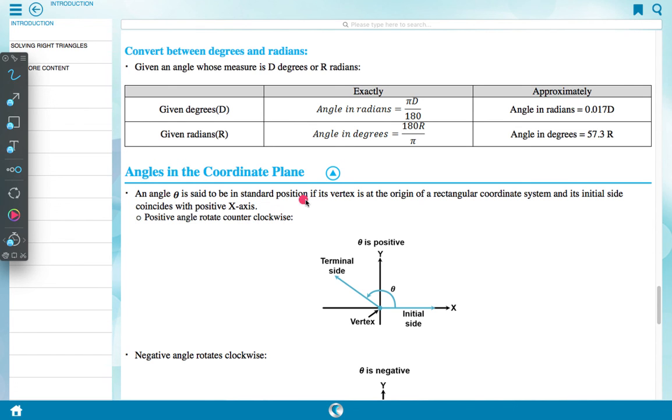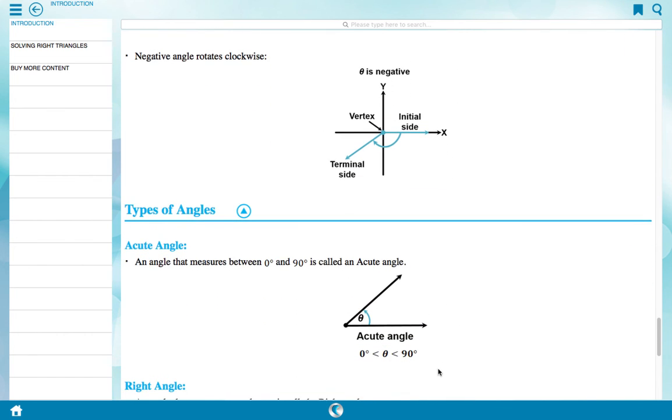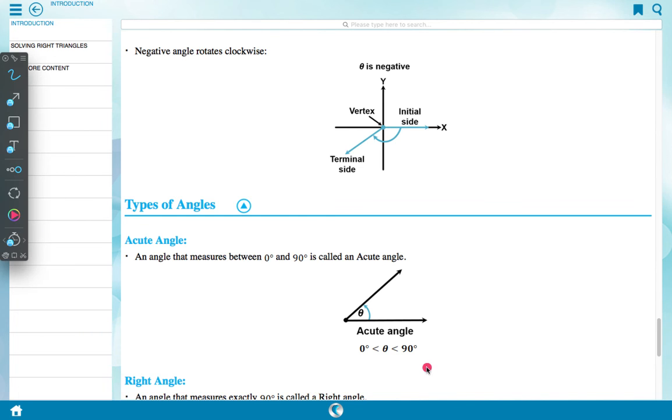Angle in the coordinate plane. An angle theta is said to be in standard position if its vertex is at origin of rectangular coordinate system and its initial side coincides with positive x-axis. Positive angle rotates counterclockwise. Here initial line, vertex, terminal side and theta positive. Negative angle rotates clockwise. Here initial line, theta is negative, so this is vertex and terminal side. This one is our negative angle.